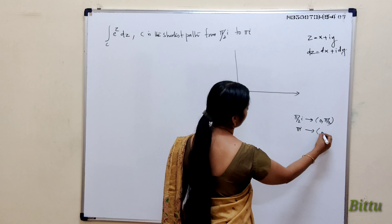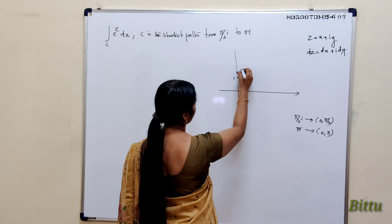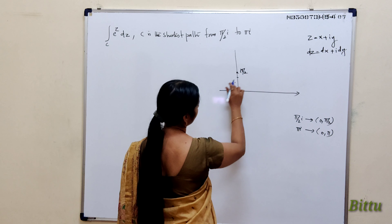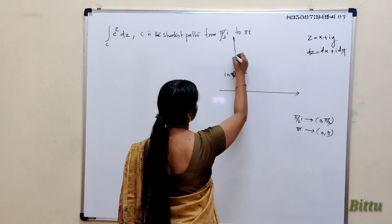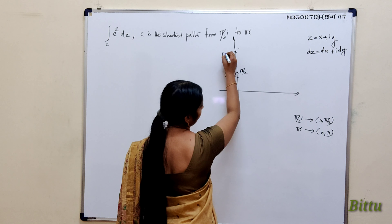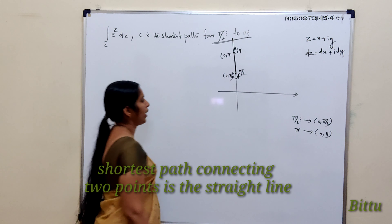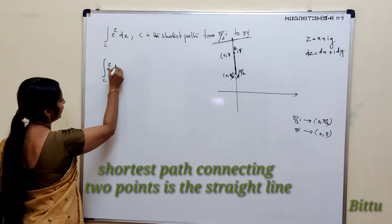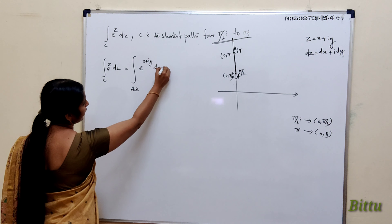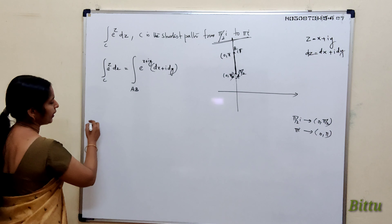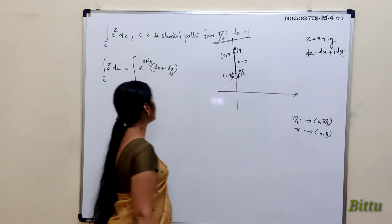πi is the point (0, π), since π ≈ 3.14. So the point (0, π/2) is marked, and (0, π) is also marked. The straight line AB connects these two points. We have to evaluate the integral along AB: integral of e^z dz equals integral along AB of e^(x+iy) times (dx + i dy).